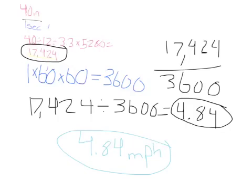So we did 1 second times 60 times 60 because there are 60 seconds in a minute and 60 minutes in an hour. And we got the answer as 3,600. Then we wrote this out as a fraction just to help us see what we were working with. Then we did 17,424 divided by 3,600, which equals 4.84.